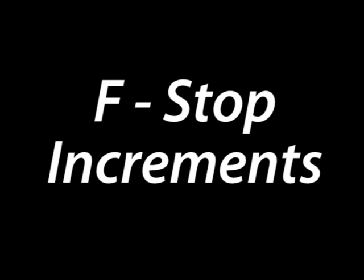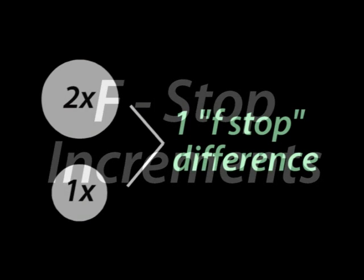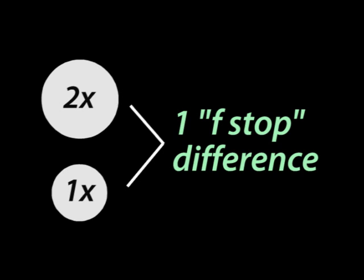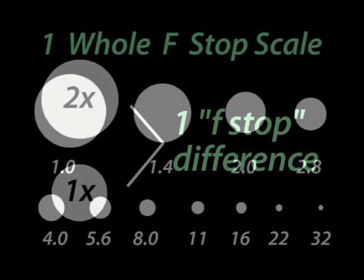Another way the term f-stop is used is to indicate an arbitrary unit of light. If you have one aperture that allows twice the amount of light in as another, the difference between the two is said to be one f-stop.